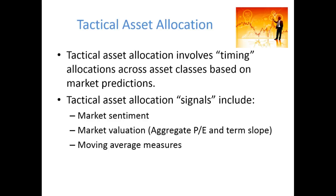The term slope is the difference in interest rates on long-term versus short-term securities. This is used in tactical asset allocation due to the belief that a downward sloping yield curve — whereby long-run interest rates are actually lower than short-run interest rates — is believed to be an indicator that economies may be about to perform poorly or enter into a recession. So tactical asset allocation funds would see a downward sloping yield curve as a signal that they need to invest in defensive asset classes.